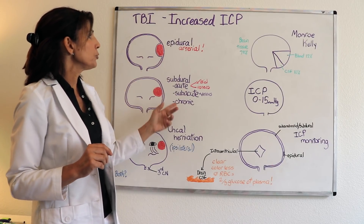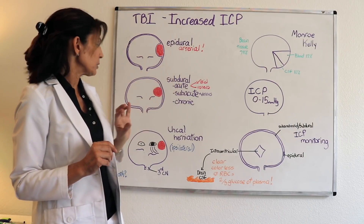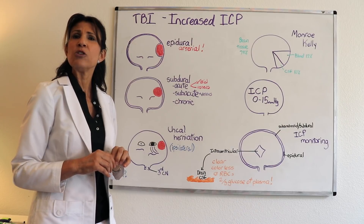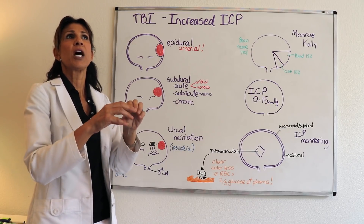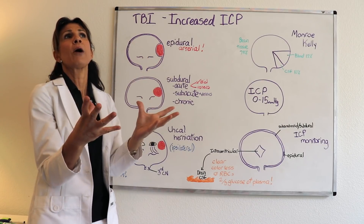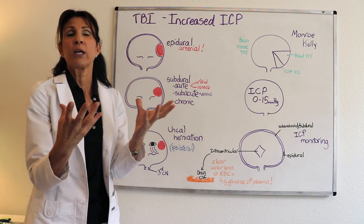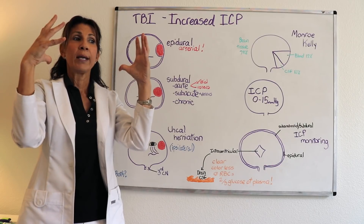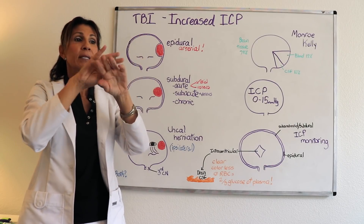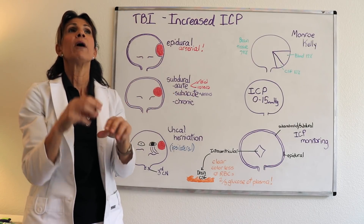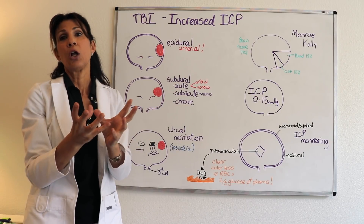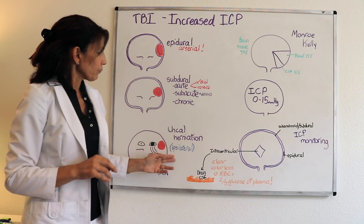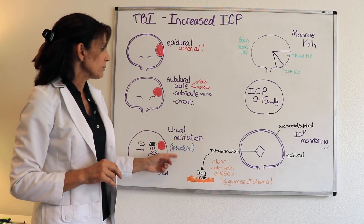There is also a third type called diffuse axonal injury, which is essentially diffuse inflammation occurring within the cranial contents. When pressure increases, it occurs underneath all of the skull — diffusely rather than in one localized area.